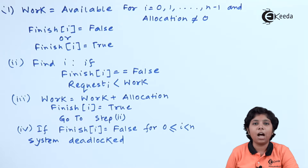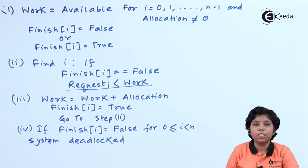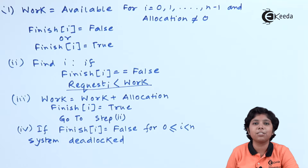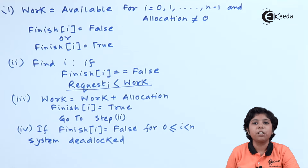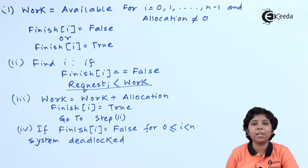After executing step 2, if finish[i] is false and request[i] is less than work, we know process Pi is requesting resources less than the available resources, so we immediately release those resources to make them available again. We assume Pi will never require any more resources to complete its unfinished task. If this assumption is correct, the system will be in a safe state; if not, it will be in an unsafe state.